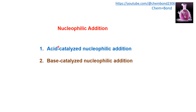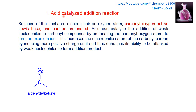Nucleophilic addition can occur by two methods: acid-catalyzed and base-catalyzed nucleophilic addition. In acid-catalyzed addition, the carbonyl oxygen has an unshared electron pair and acts as a Lewis base — a species that can donate electrons or accept a proton and become protonated. Acid can catalyze the addition of a weak nucleophile to a carbonyl compound by protonating the carbonyl oxygen atom.